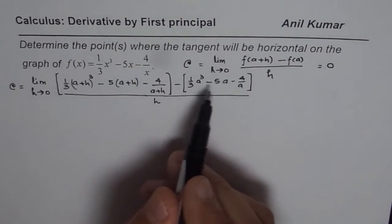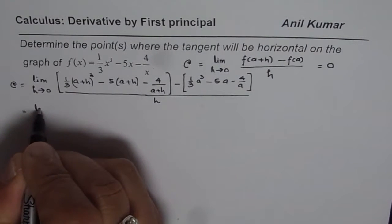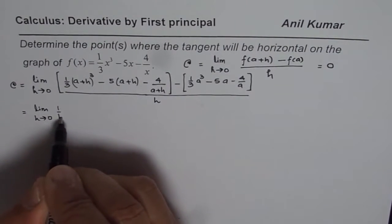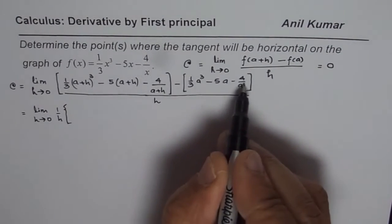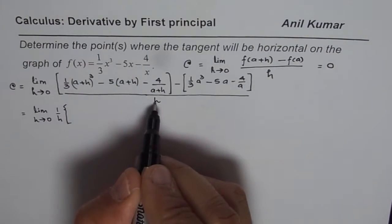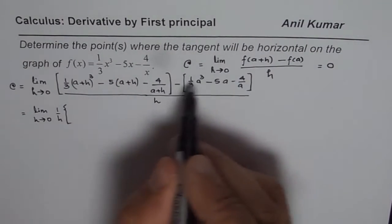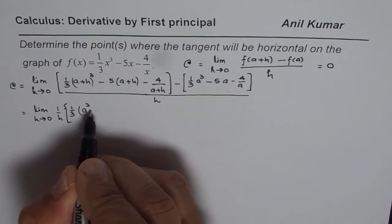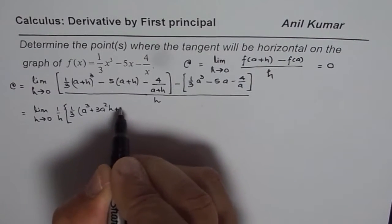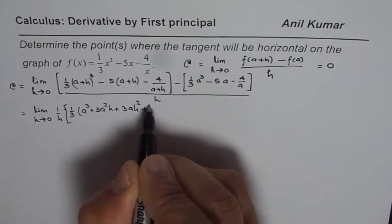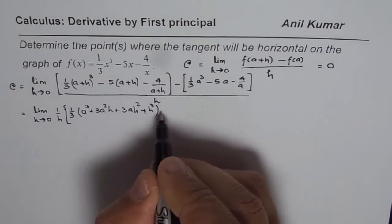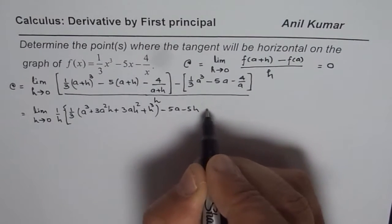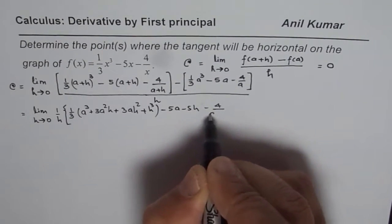Now let us expand and simplify. We get limit as h approaches 0, written as (1/h) outside square brackets. Expanding using the (a+b)³ formula, we get (1/3)[a³ + 3a²h + 3ah² + h³], then -5a - 5h, and -4/(a+h). Minus the expression [1/3 · a³ - 5a - 4/a].